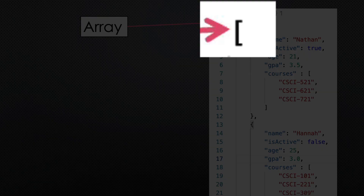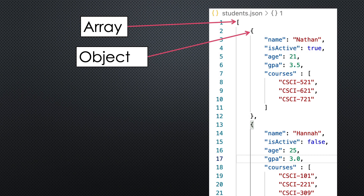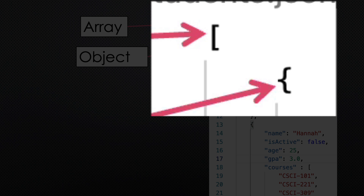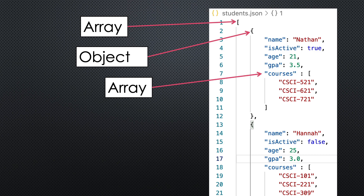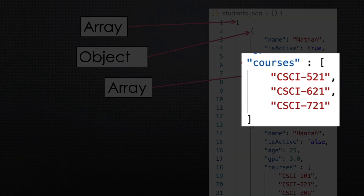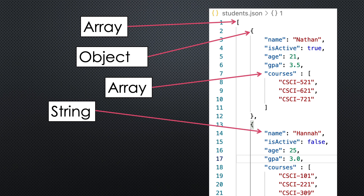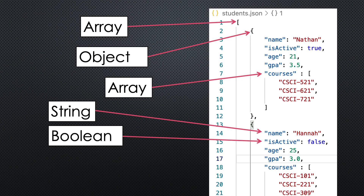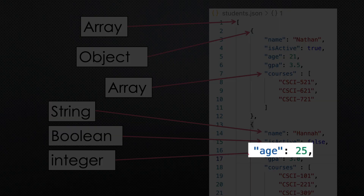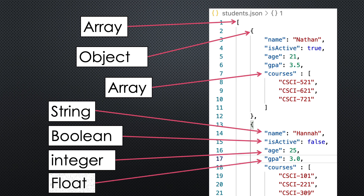Now let's look at how this is formatted. In this example you can see that the first character is a square bracket, which means that we have a list or an array. A curly bracket means that we are beginning the definition of an object — in this case the object is a student. Inside this student is another property that is an array itself. Each item in the object or in the array can be a string, as you can see with the name, or it could be a boolean value, which is a true or false value. Notice there are no quotation marks around the word false. The next item is an integer — age of 25 — and notice there are no quotation marks around the number. And then the next item is a float, which is a decimal number. So this is the basics of how you would construct an object or a list in JSON.